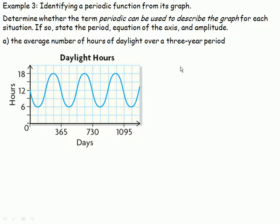We're asked to identify a function as being periodic or not. If it's periodic, we're asked to list several properties. The period, the equation, the axis, and the amplitude. This actually relates to the example in the very first page. This is the number of hours of daylight over a three-year period for a place.